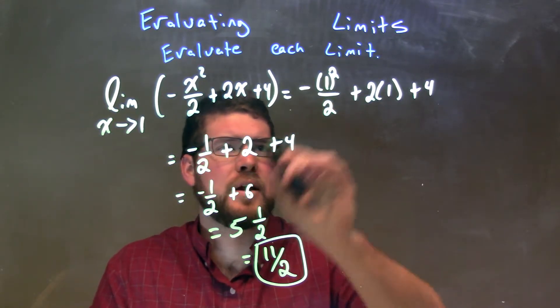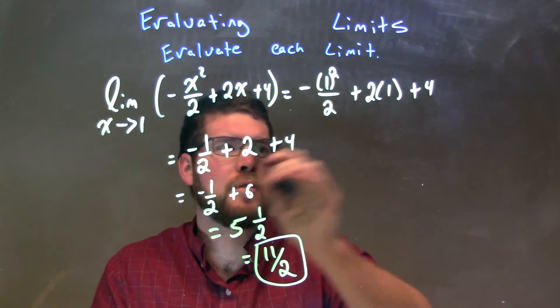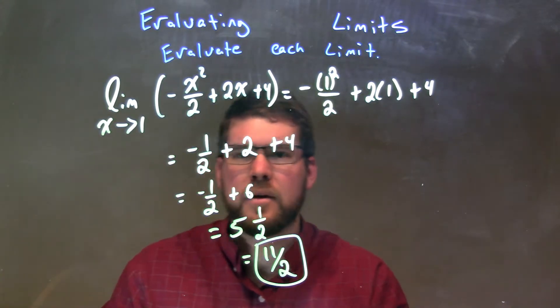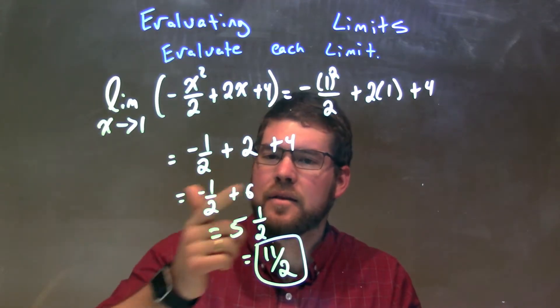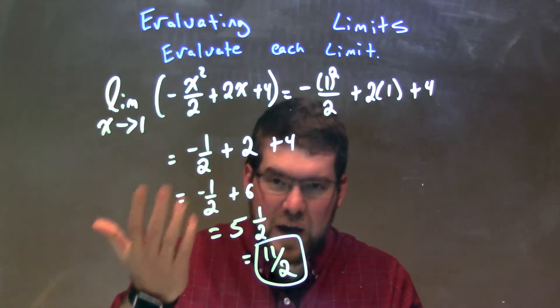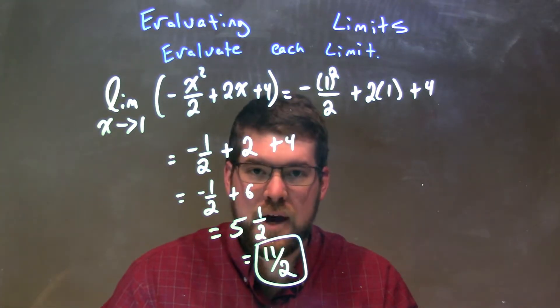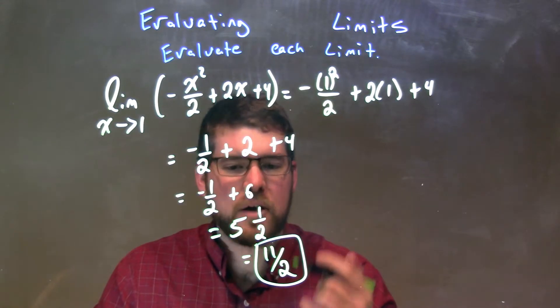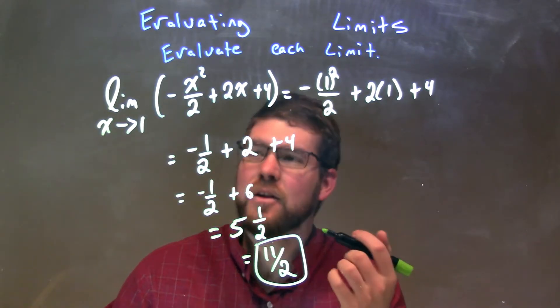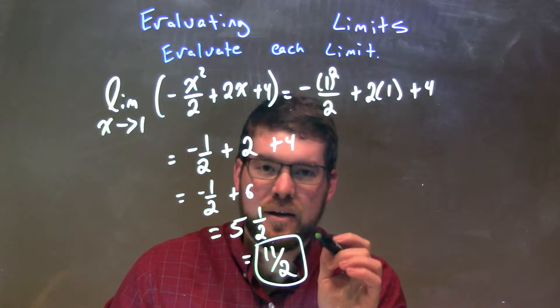Well, 1 squared is 1. The negative comes down too, so negative 1 half. 2 times 1 is 2, and the 4 comes down. 2 plus 4 is 6, and then 6 plus a negative 1 half is subtract 1 half, which is 5 and 1 half. Writing that as an improper fraction is 11 halves. So our final answer to this limit is 11 halves.